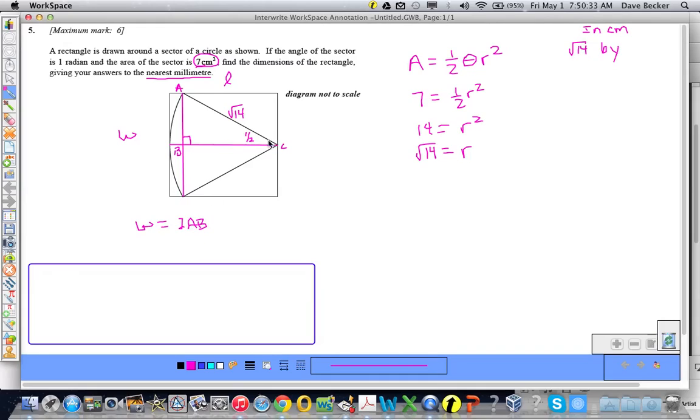Hopefully, you'll also agree with me using right triangle trigonometry that... nope, not sine of AB. Sine of one-half equals AB over √14. So therefore, √14 sin(1/2) equals AB. Hey-oh! The width equals 2 times AB, so that means the width is equal to 2√14 sin(1/2).